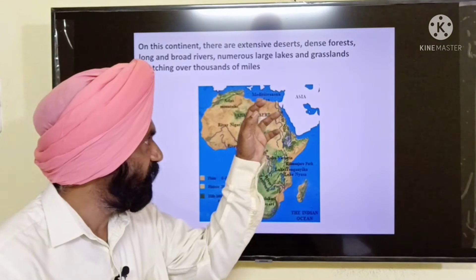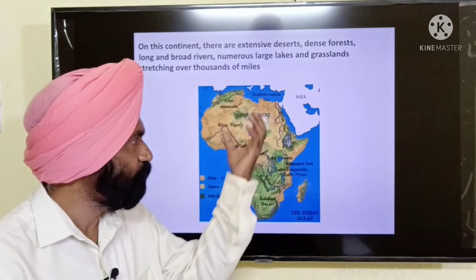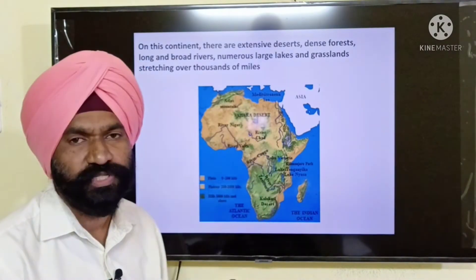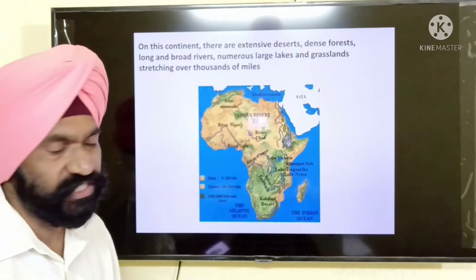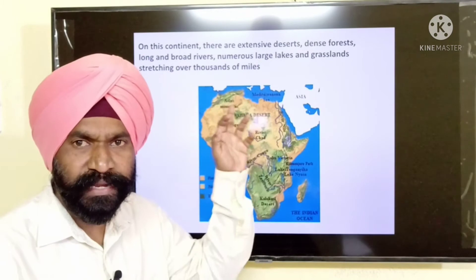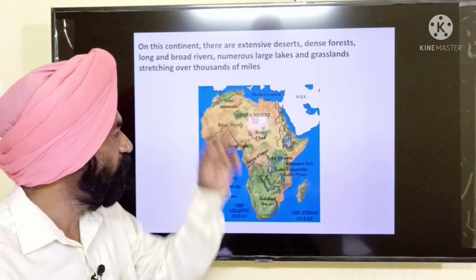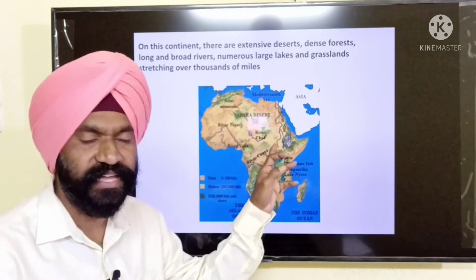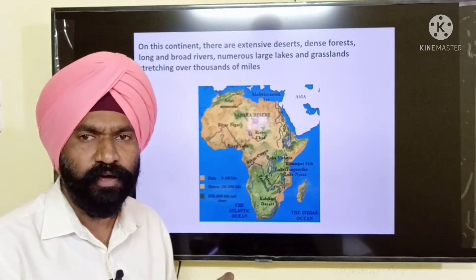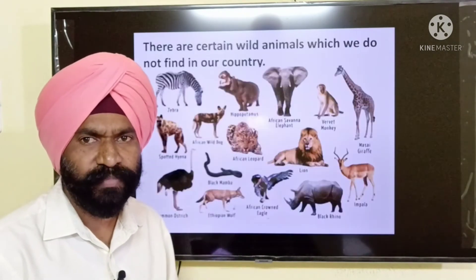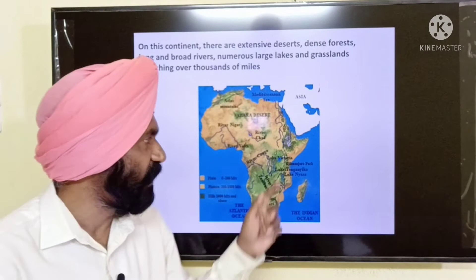You can see there are plains on the coastal regions of the continent of Africa. In the interior of Africa, there are huge plateaus. On this continent, there are extensive deserts, dense forests, and broad and long rivers — rivers like River Nile, River Congo, and River Niger — which are very broad and long rivers of Africa. You can also see numerous lakes and grasslands stretching over thousands of miles.